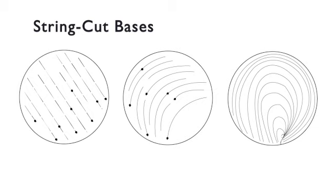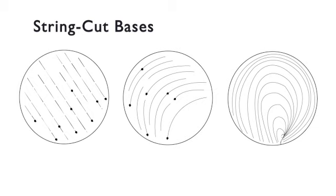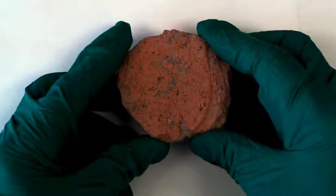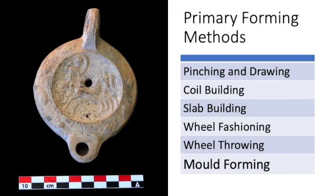Using a string or wire to cut off a vessel while it's turning on a wheel leaves distinct traces on the base. The curvature of the drag marks varies with the speed with which the wheel is turning. However, subsequent forming of the base can remove these traces.